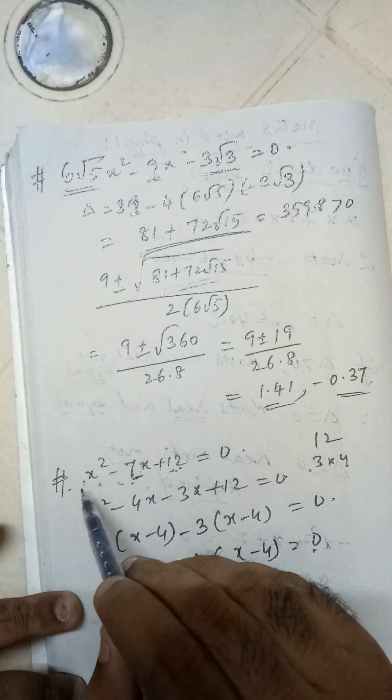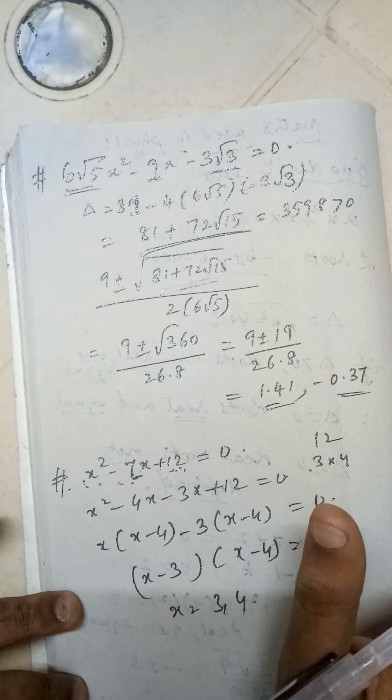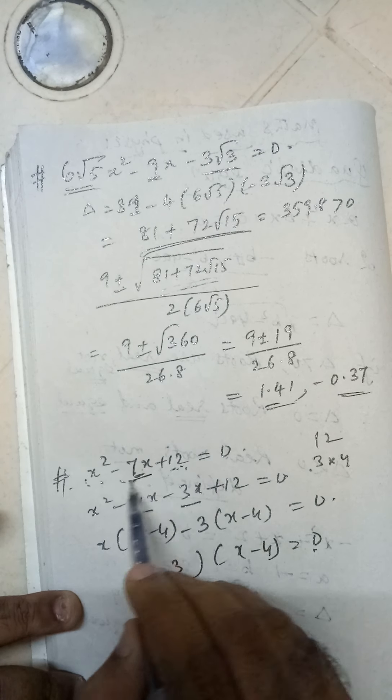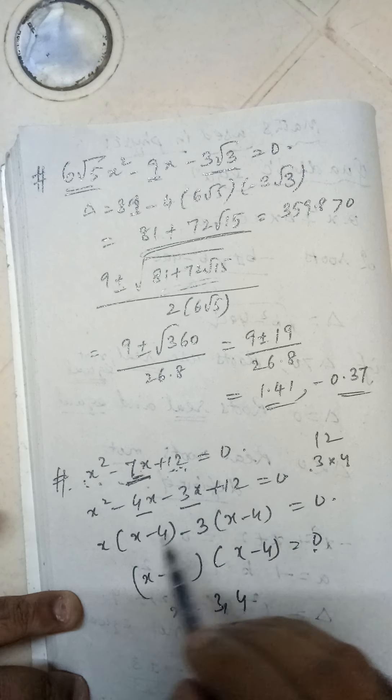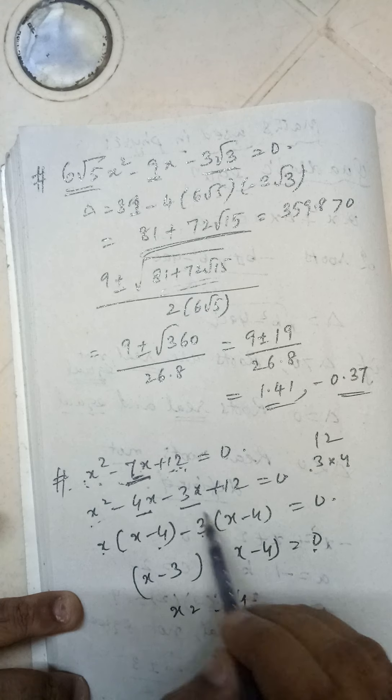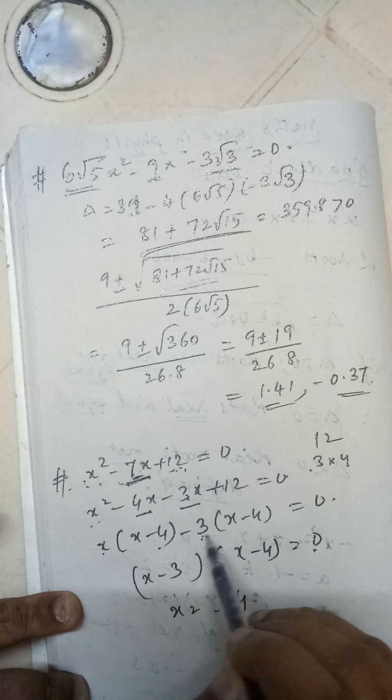So here -4x - 3x = -7x. And you take x common here: x(x - 4). And if you take -3 common here: -3(x - 4). So you can just open and see: -3x - 3×(-4) = +12.